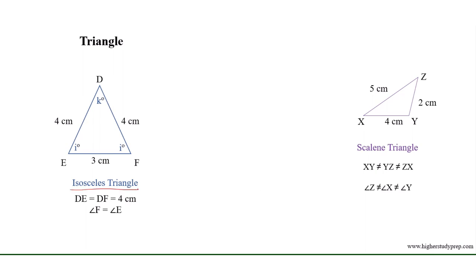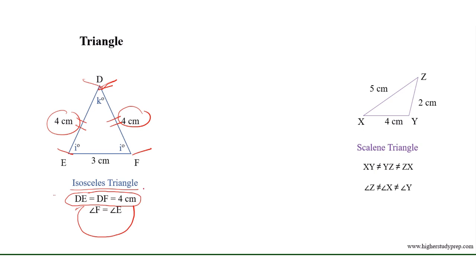In an isosceles triangle, two sides are equal to each other. For example, in triangle DEF, side DE equals side DF equals 4 cm. The angles opposite to the equal sides DE and DF are angle F and angle E respectively. So angle F equals angle E.